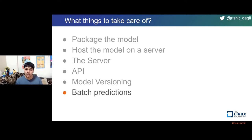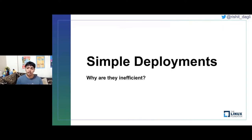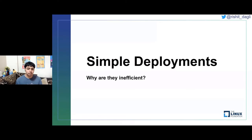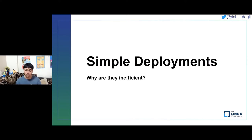There are actually a lot of things you need to take care of while deploying a model — these are just some of the main ones. It actually seems like quite a lot of work, but we'll also see a demo of making a deployment with all of this in place. Before that, I want to go over simple deployments and why they become inefficient for larger models, when you get a lot of users, or when you have many model versions.